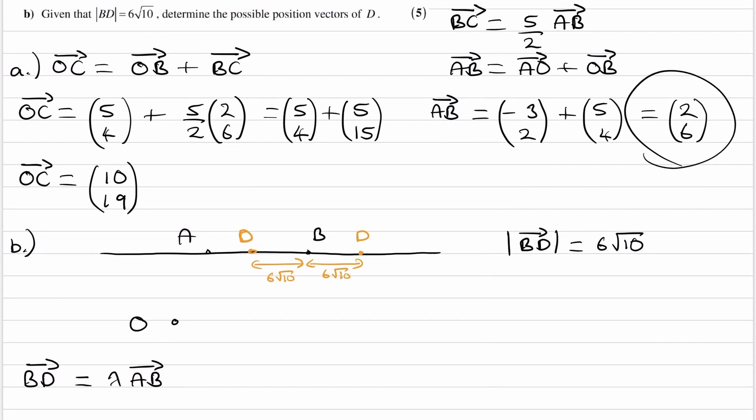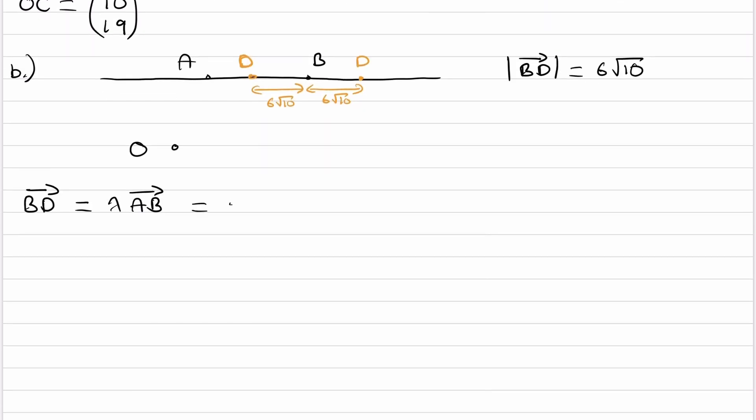AB was (2, 6), so therefore you can write BD as λ times (2, 6). Let's write that as (2λ, 6λ). And then if the magnitude of BD is 6√10, let's work out the magnitude of BD from what we have here. That will be the square root of (2λ)² + (6λ)².